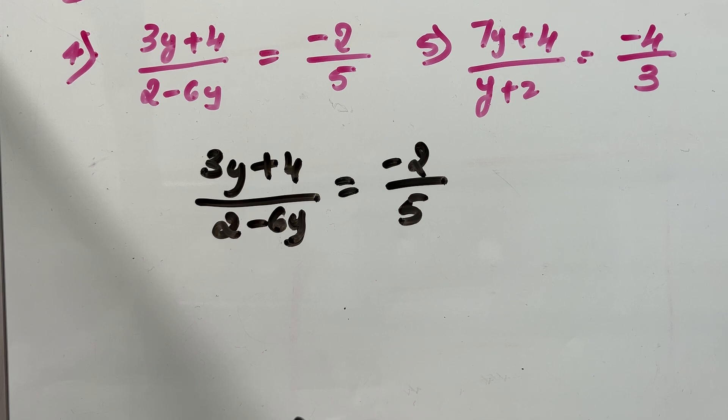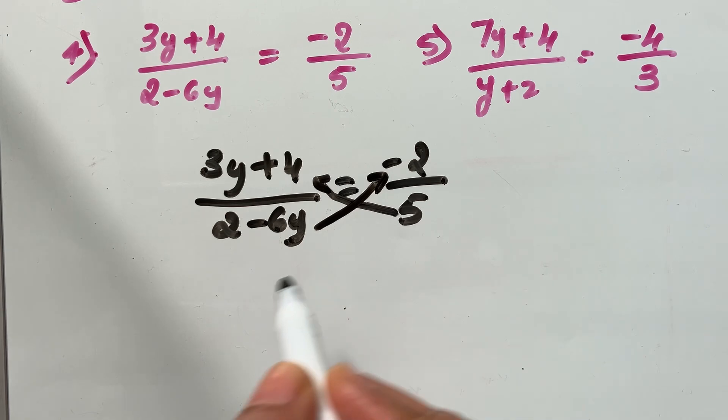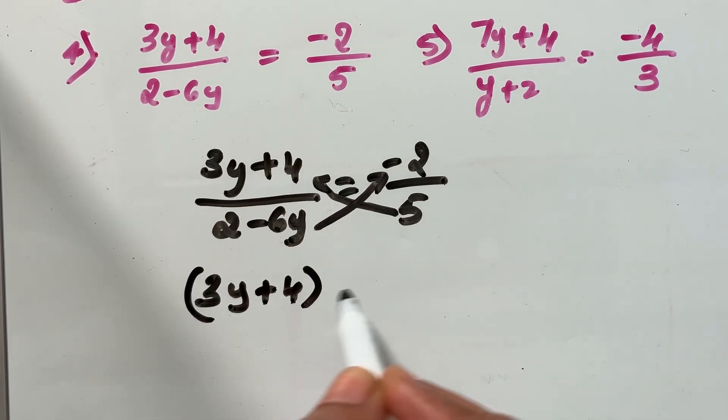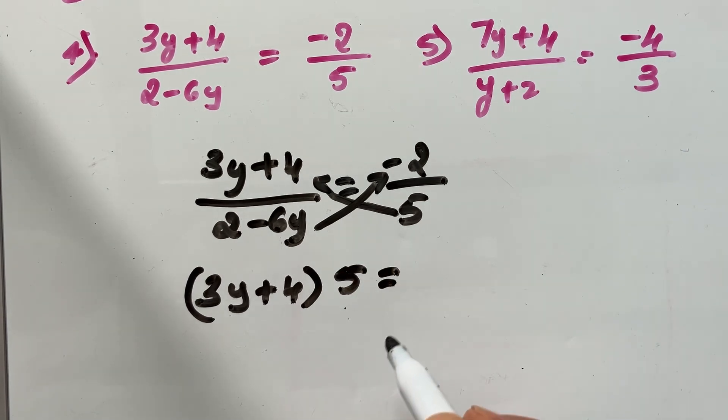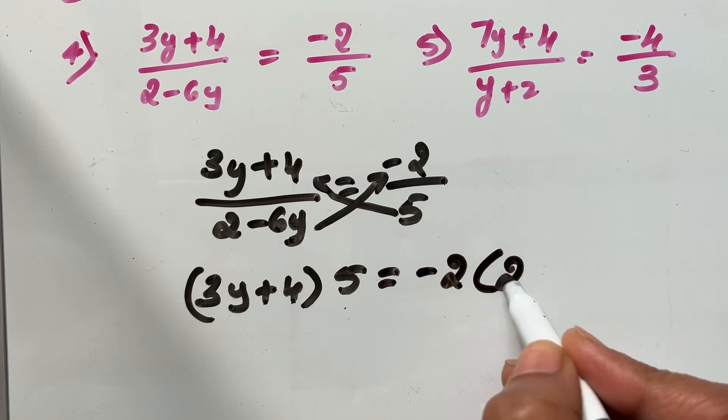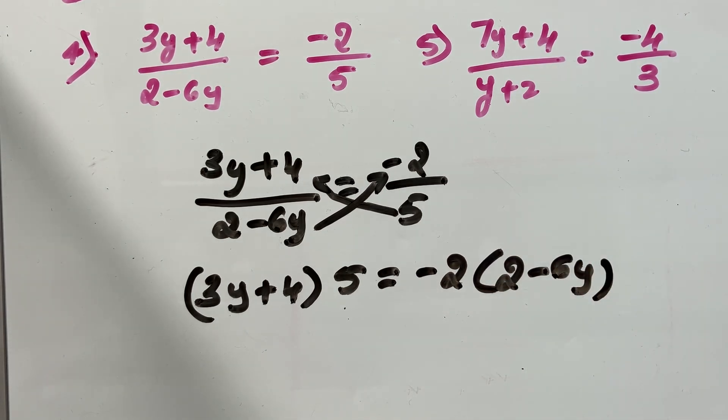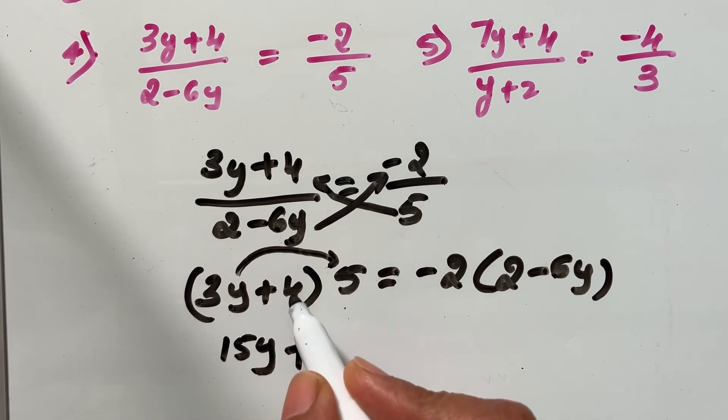As the first step here, you need to cross multiply. So, 3y plus 4 is multiplied by 5 is equal to negative 2 is multiplied by 2 minus 6y. Now, apply distribution property, that is 3y times 5. 15y plus 4 times 5. 20.